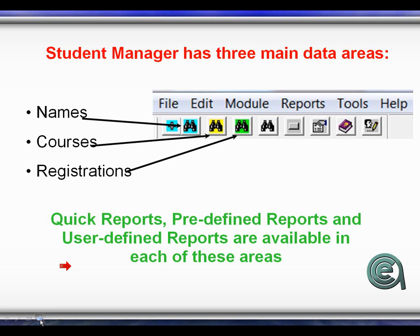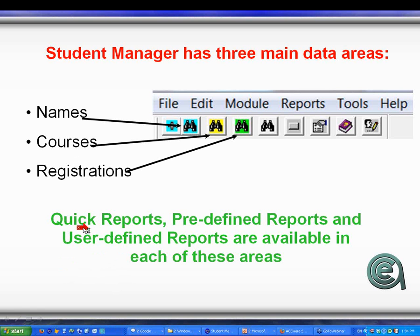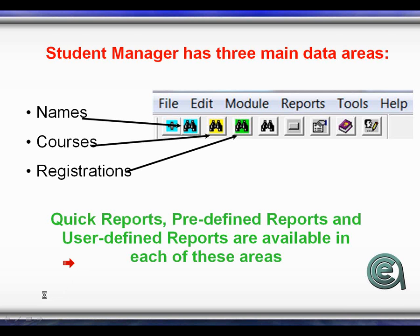Data storage. I always talk about the three-legged stool of a database — the people, the students, the names; the classes that you offer; and then the registration, which is the record of the student enrolled in a class. There are quick reports, predefined reports, and user-defined reports for all of these areas.